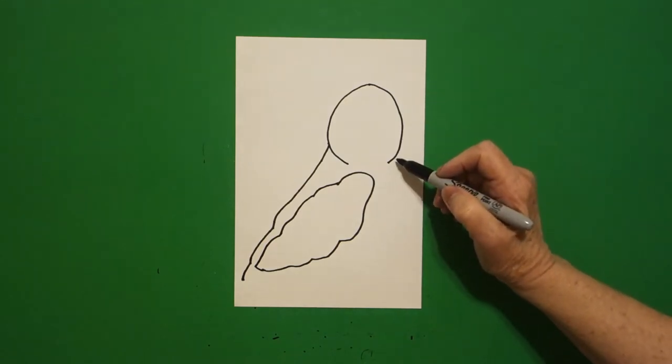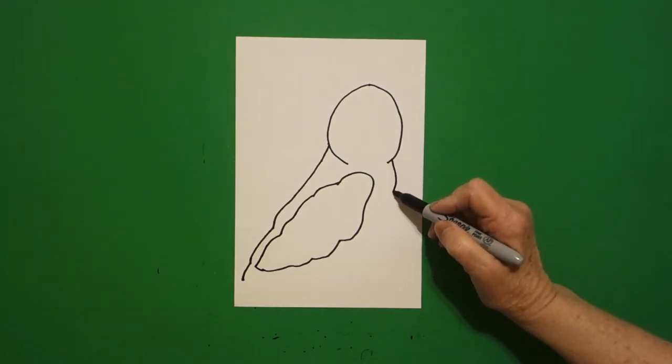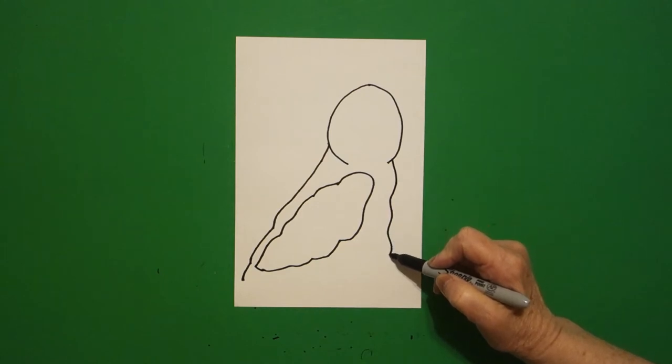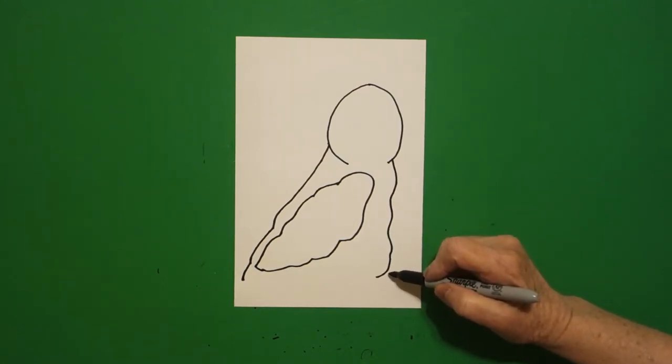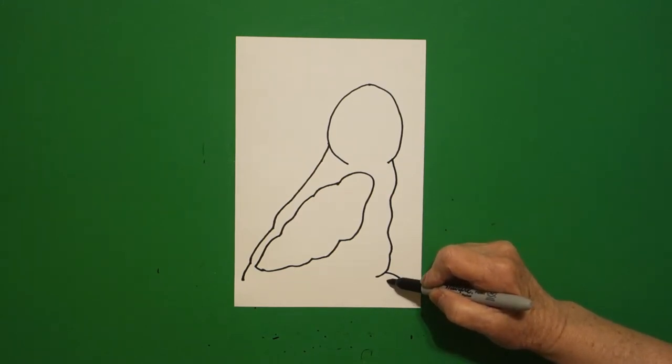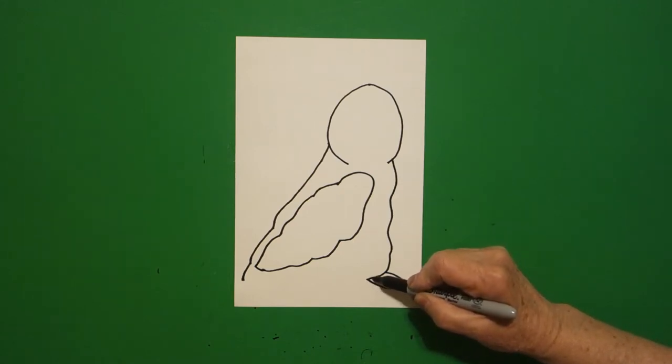Come back over here on the right-hand side, we're going to draw a curved line down, down, down, and leave it floating. Because right here at the bottom, we're going to draw a curved line out, curved line in, out, in, connect.